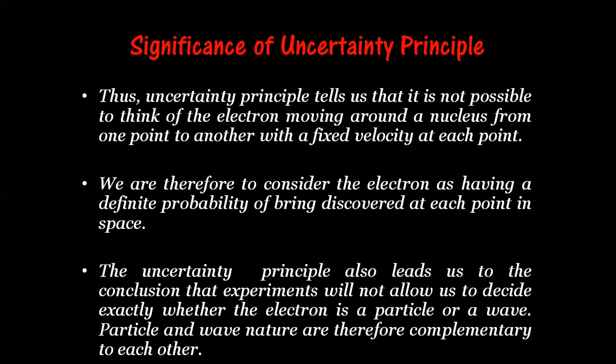It is not possible to pinpoint an electron in a particular orbit or shell. That is why we talk about the probability or chances of finding an electron in a particular region of space. The region of space where the chances of finding the electron is maximum, we call it an orbital. This is how the uncertainty principle gives us the idea of orbitals instead of a defined path called an orbit. It also leads to the failure of Bohr's model, which tells us that an electron revolves in a fixed orbit with a fixed velocity — which is not possible.